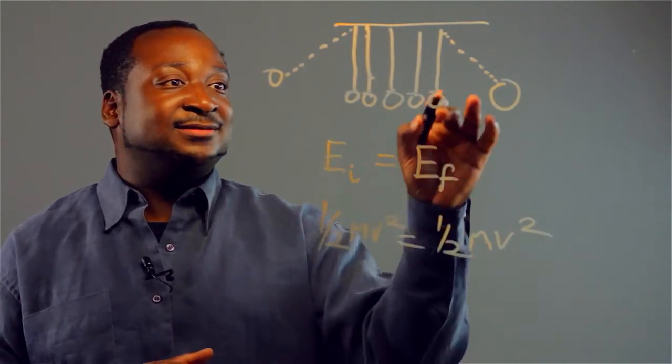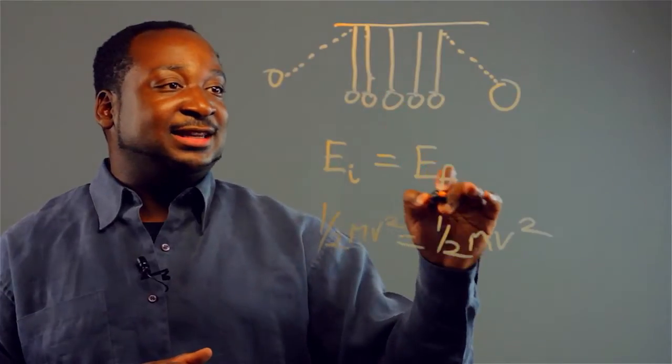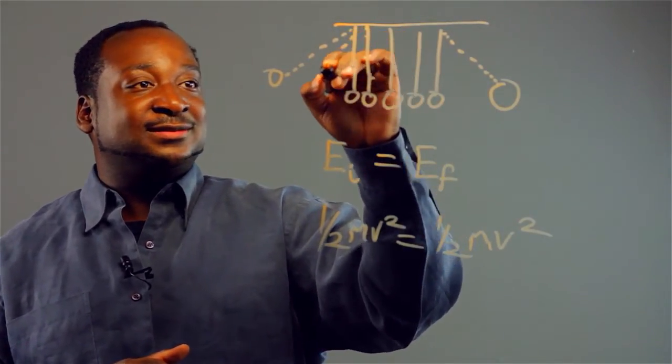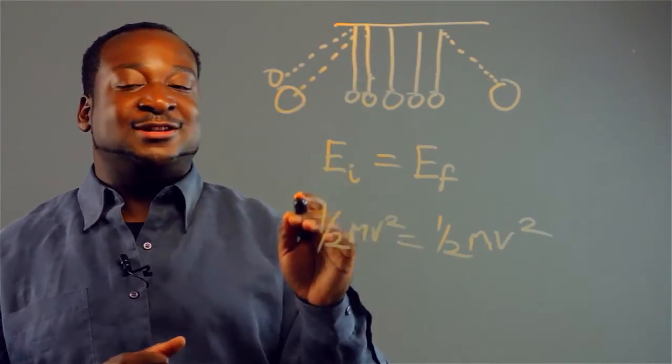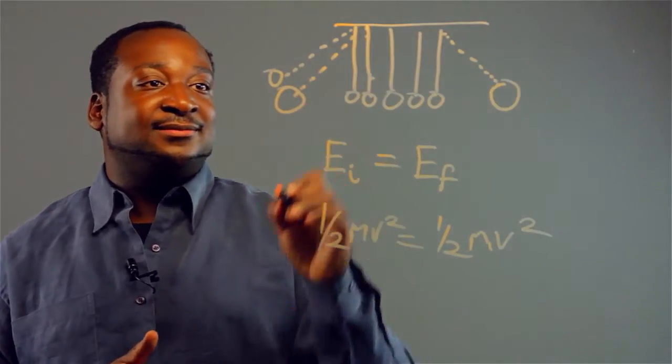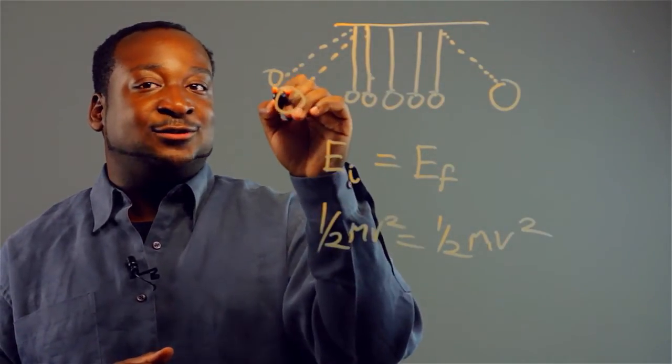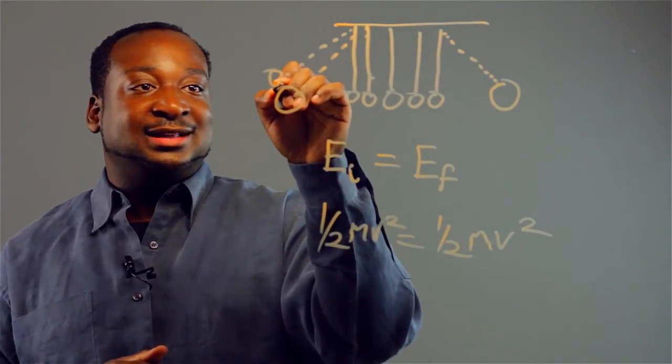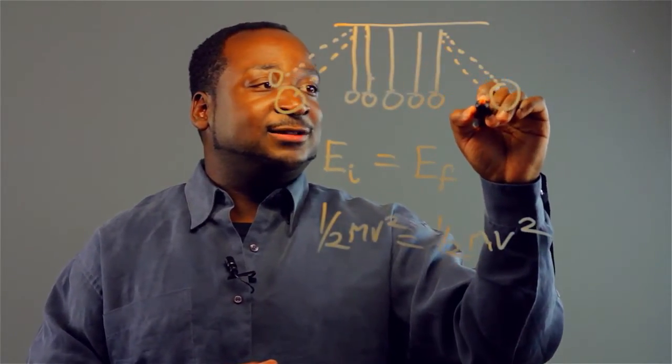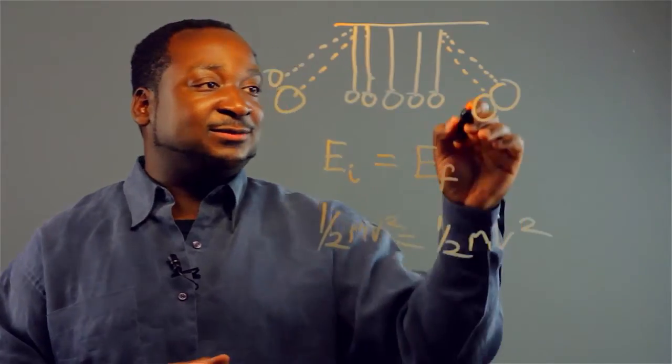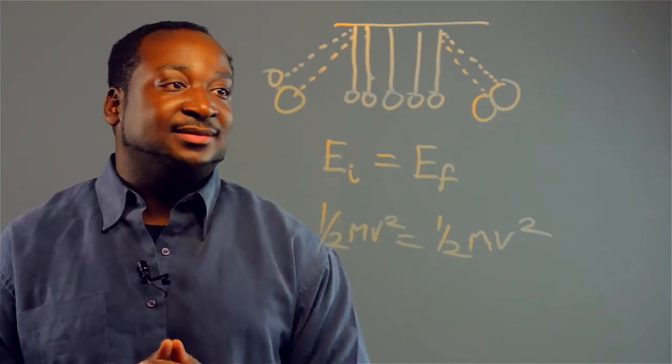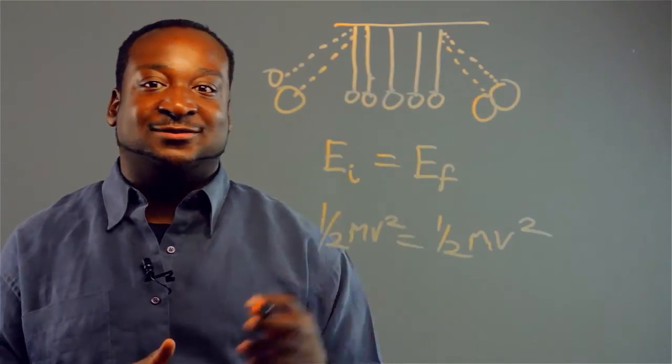So you can swing two balls. There we go, we're changing the mass. And if we swing two balls in the initial, then we'll see two balls swinging in the final. And so on and so forth.